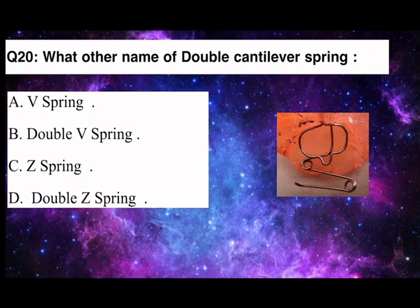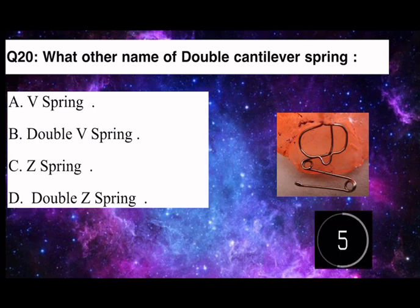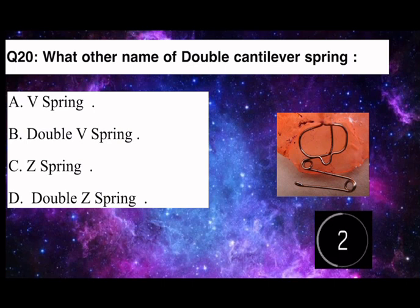Q20. What is the other name of double cantilever spring? A. Versus spring. B. Double V spring. C. CZ spring. D. Double Z spring.